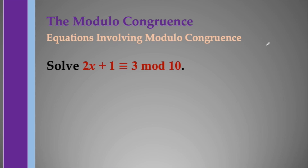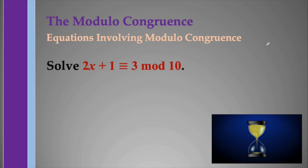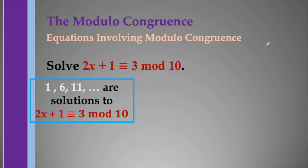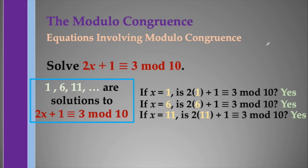Now let's try another equation: 2x plus 1 is congruent to 3 modulo 10. The solutions are 1, 6, 11, and so on. Since when x equals 1, x equals 6, and x equals 11 are substituted into 2x plus 1, that gives congruence to 3 modulo 10. And since this is a sequence with difference of 5, then expectedly 16, 21, 26, and so on are also solutions.